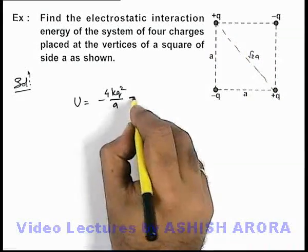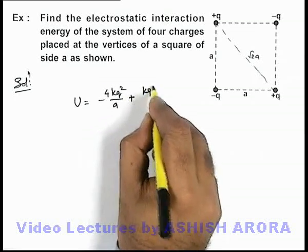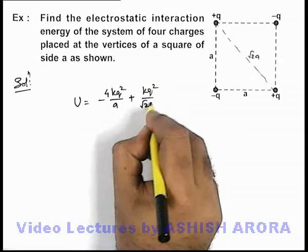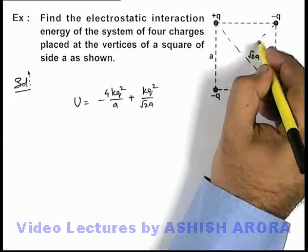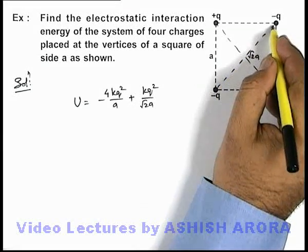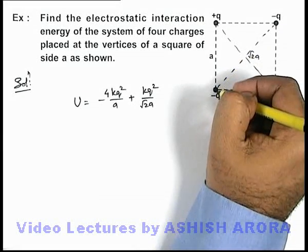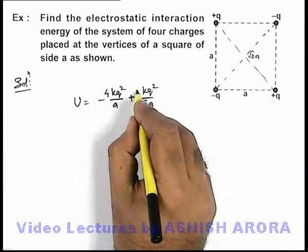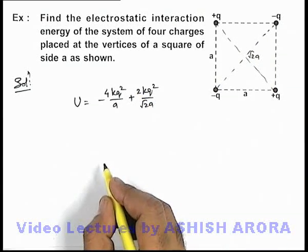So the interaction energy would be plus kq²/√2a. And for this pair also, as the charges are of same polarity the interaction energy will be plus kq²/√2a. So it'll be taken twice.